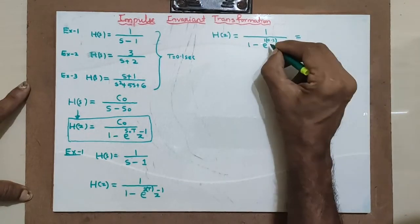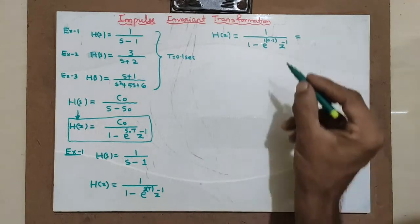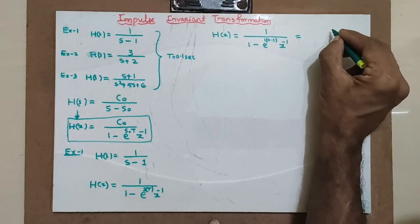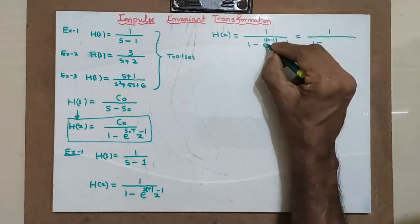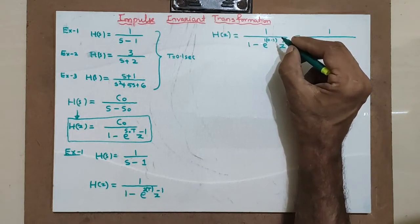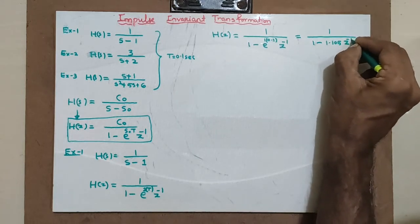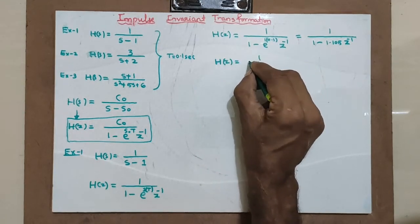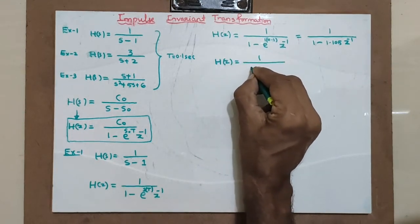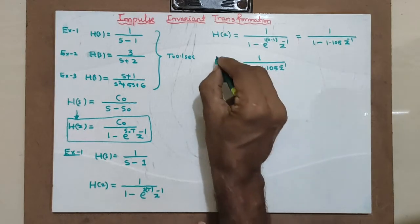You have to take a calculator and compute e raised to 0.1, which comes out to be 1.105. Hence for Example 1, using impulse invariant transformation, the resulting answer is H(z) equal to 1 divided by (1 minus 1.105 z raised to minus 1). This is the answer.